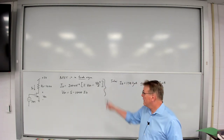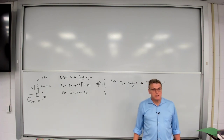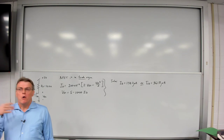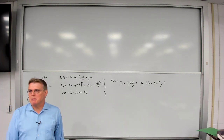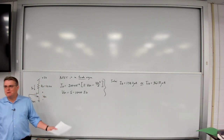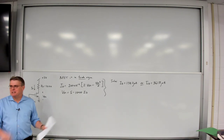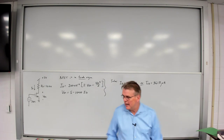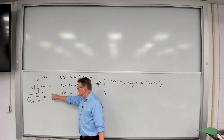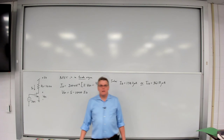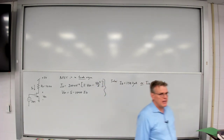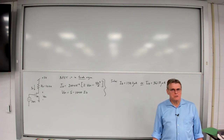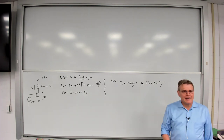Let's return to our example from last time. Today we're going to work a lot of NFET and PFET examples, looking at different problems using these DC equations. Last time I took the same circuit and increased RD from 5k to 10k, proving it's no longer in saturation because it violated the boundary conditions. So the NFET had to be in the triode region.